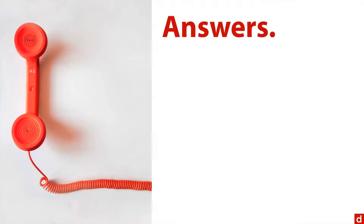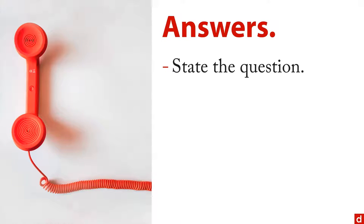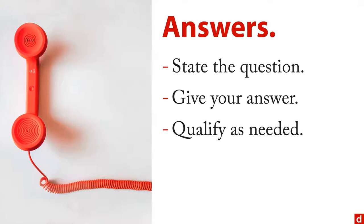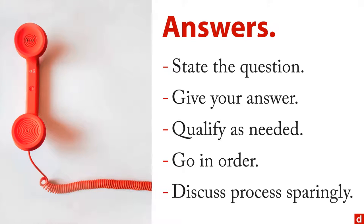You can also think about the answers. When you're explaining the project to the client, you might want to start with a very simple procedure: state the question that you're answering, give your answer to that question, qualify as needed, and then go in order top to bottom. You're trying to make it as clear as possible what you're saying, what the answer is, and make it really easy to follow. In terms of discussing your process — how you did this all — most of the time, it's probably the case that they don't care. They just want to know what the answer is and that you used a good method. So discuss process or technical details only when absolutely necessary.